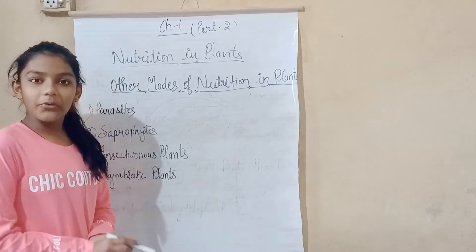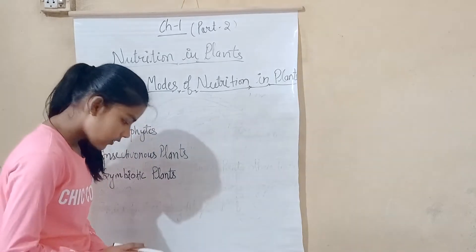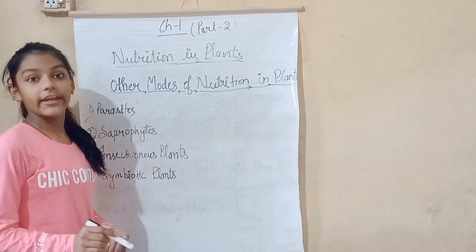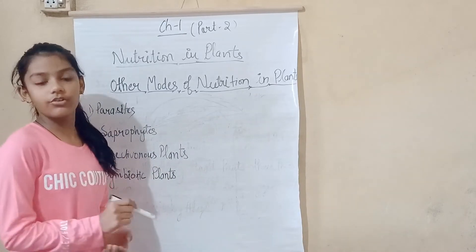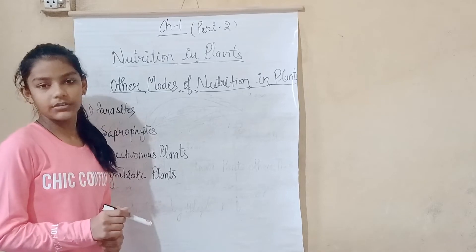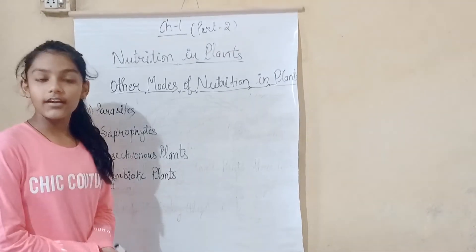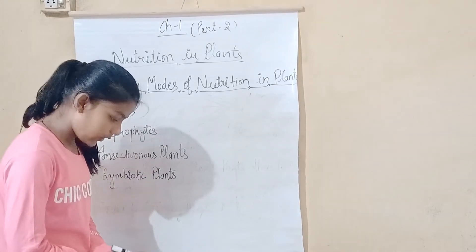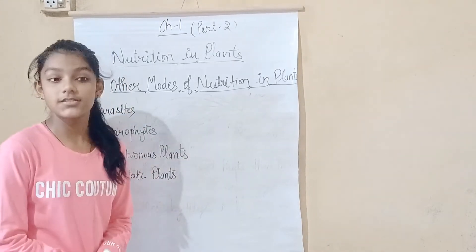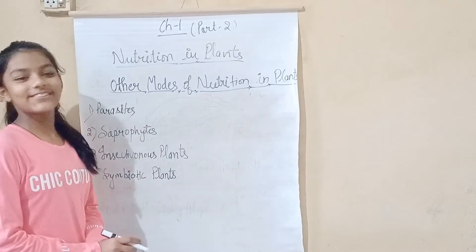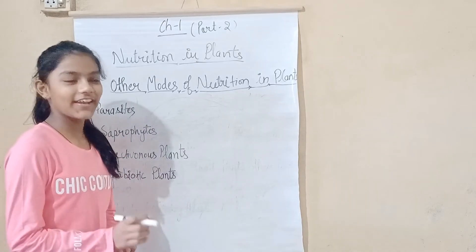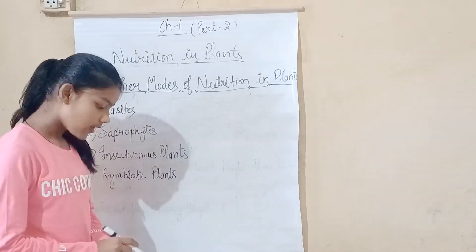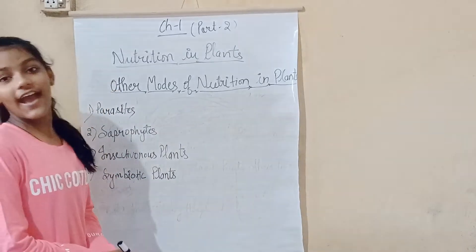Cuscuta is also called Dodder. There are some more examples of parasites: weed rust, corn smut, and mistletoe. There are also some animals that are parasites, for example bed bugs, leeches, and mosquitoes.